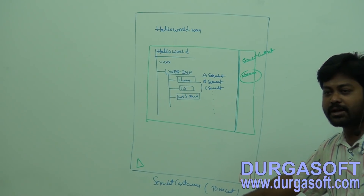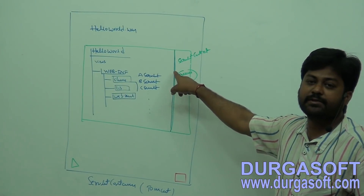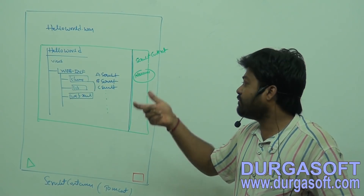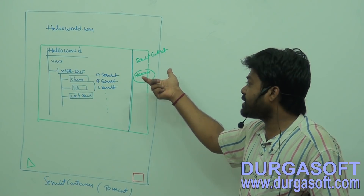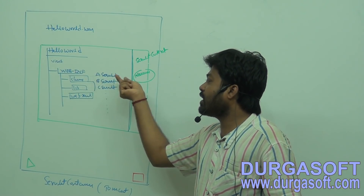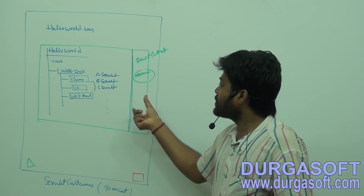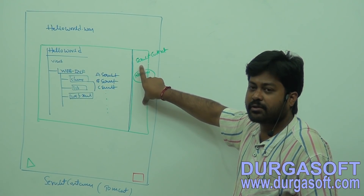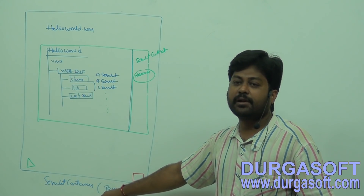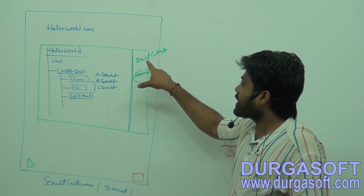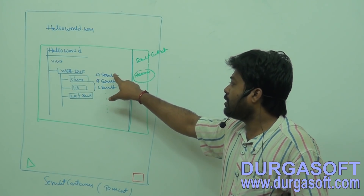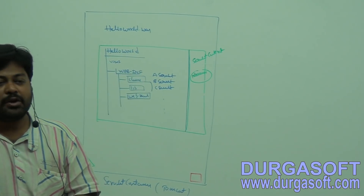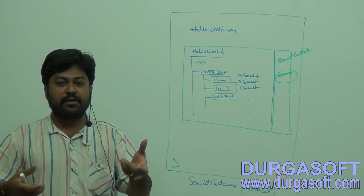Who will create it? Your servlet container. For what purpose? To keep public data — shareable resources. If you want to share the same thing to A, B, and C, you keep those shareable resources under ServletContext. Your servlet container will create this. It is a common resource for all the servlets. But if you want to make it private — for A only I want to supply some data, for B only some data, for C only some data.